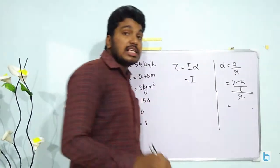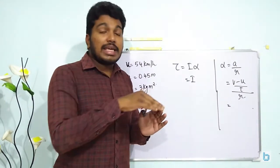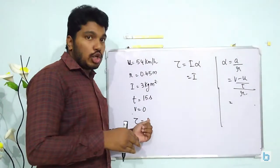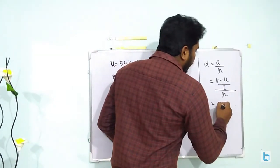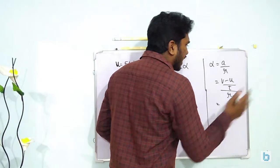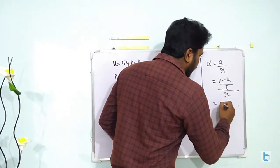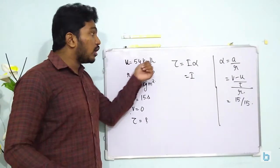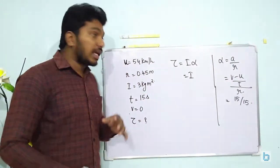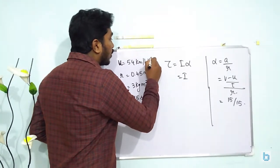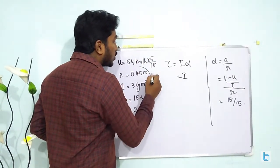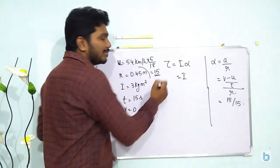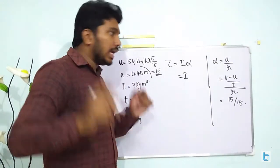So we know that it is brought to a rest which means final velocity is 0. So this will be substituting, just taking the magnitude here. I will be getting 15 by 15 because it is 54 km per hour. Converting it to meter per second, that is multiplying by a factor of 5 by 18, you will actually be getting it as 15 meter per second.